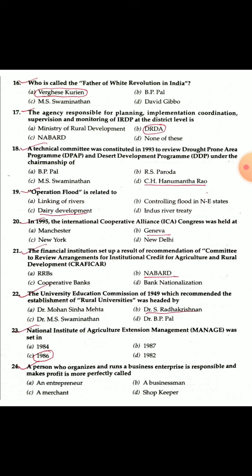Question 17: The agency responsible for planning, implementation, coordination, supervision and monitoring of IRDP at the district level was the District Rural Development Agency (DRDA), which carried out planning, coordination, supervision and monitoring of IRDP.